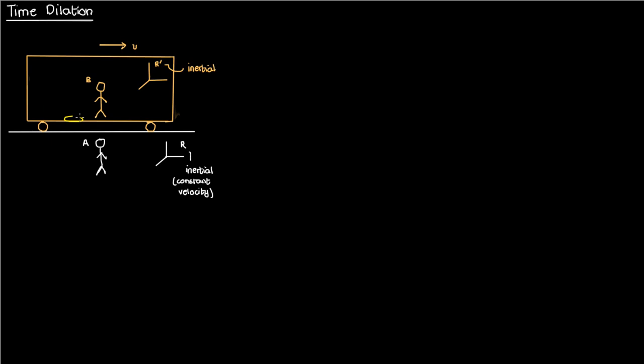Say that I put a source of light on the floor of the train, and a mirror vertically above the source of light on the ceiling of the train. Let's call the distance between the source of light and the mirror h.